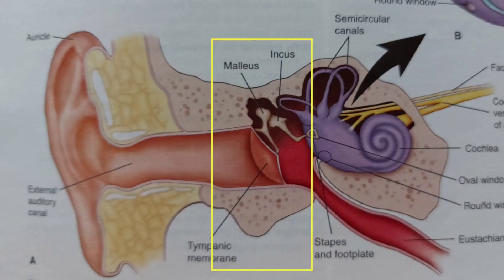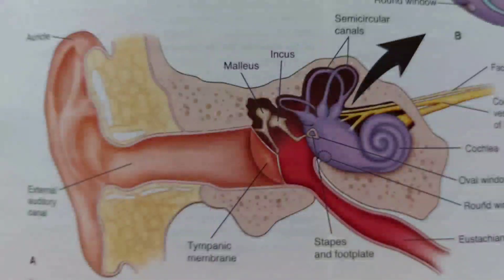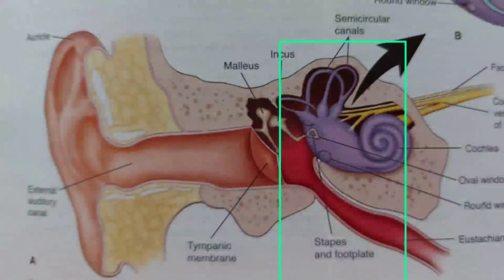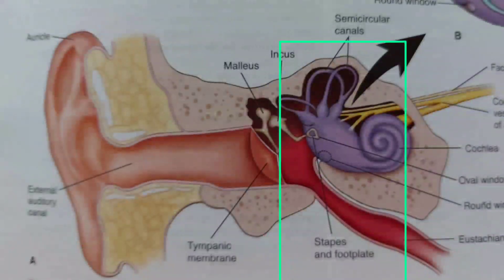Then, mainly the cochlea is in the inner ear, along with the semicircular canals.